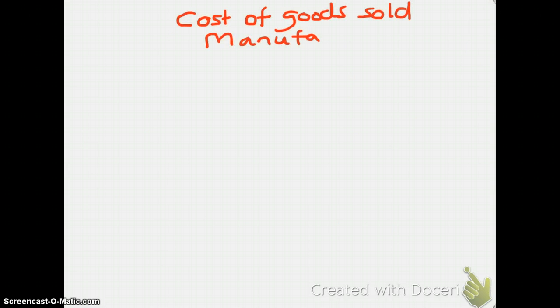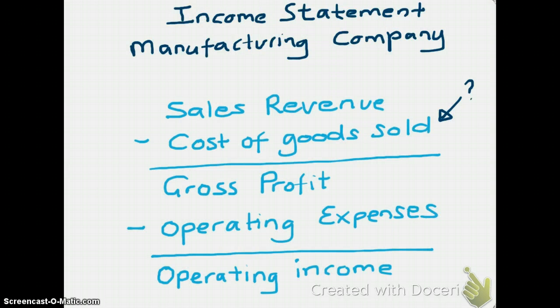Now let's take a look at cost of goods sold for a manufacturer. The income statement for a manufacturer is identical to that of a merchandiser. However, the way that we calculate cost of goods sold for a manufacturing company is very different from the way we calculate it for a merchandising company.